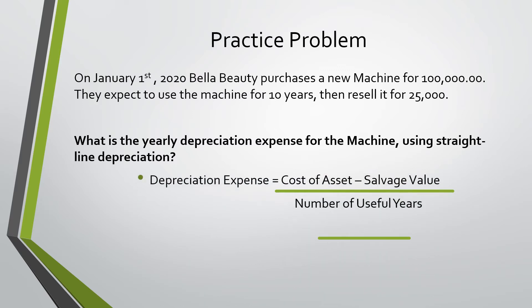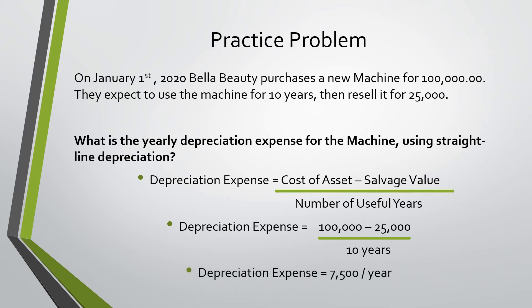We know that depreciation expense equals the cost of the asset minus salvage value, over the number of useful years. That means the depreciation expense equals $100,000 minus $25,000, divided by 10, giving us a yearly depreciation expense of $7,500.